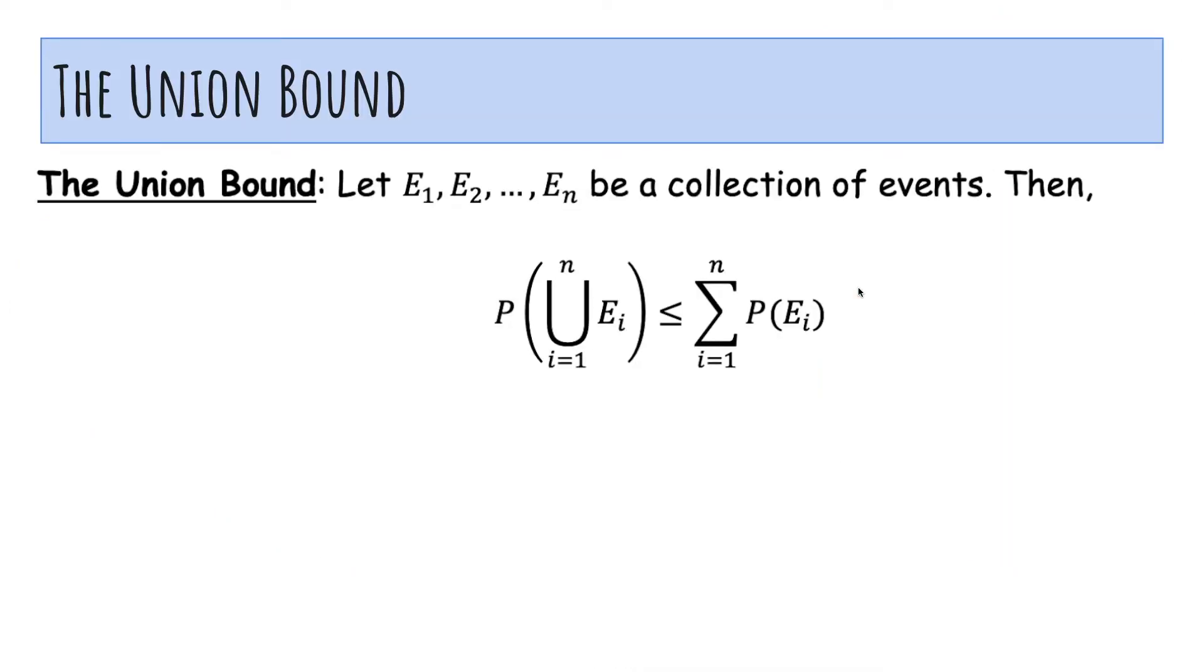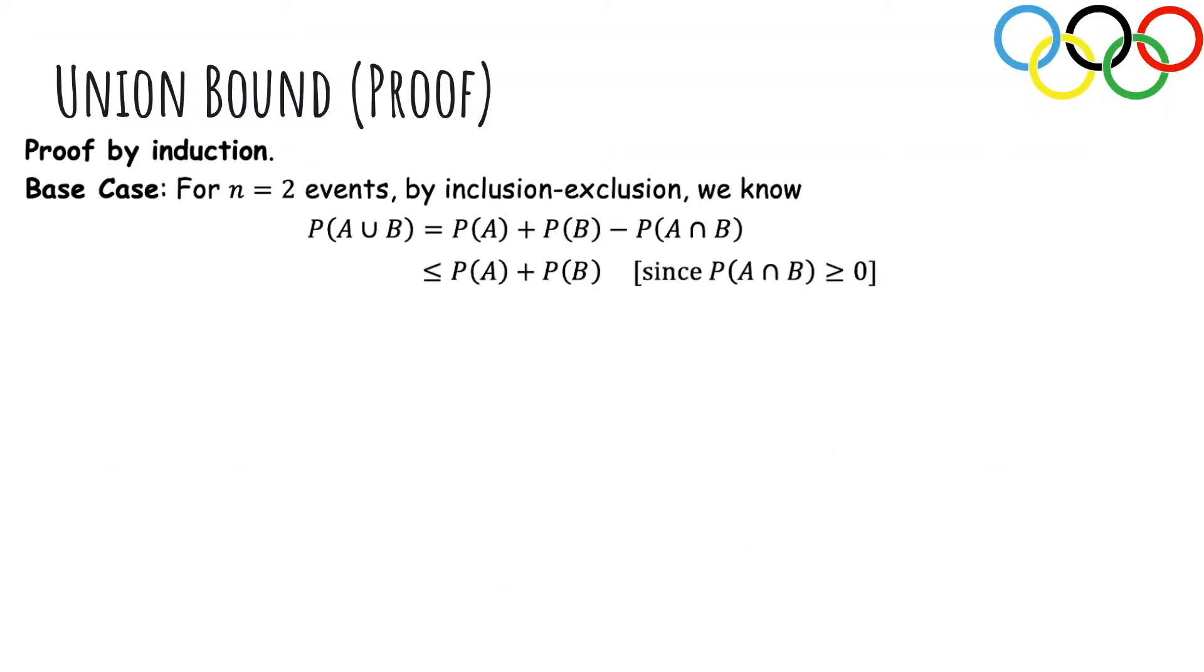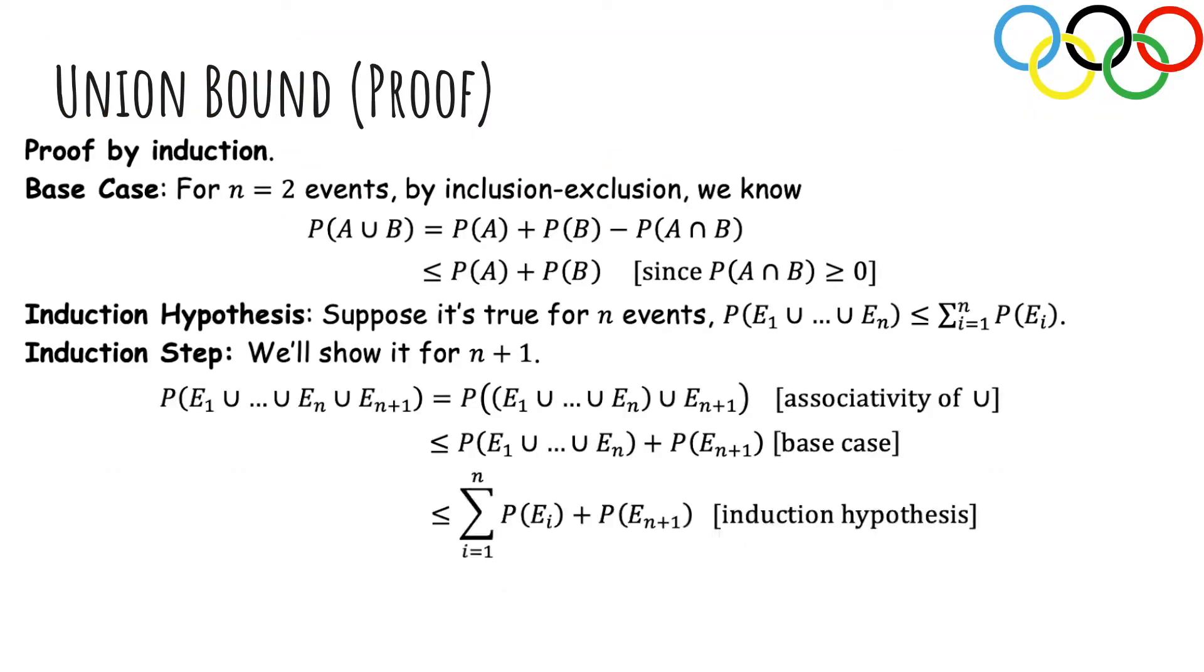So the union bound says if you have N events, the probability of the union is less than the sum of the probabilities of the events. You can see that from the picture for N equals 2. And this also actually happens to work for infinitely many events. I'm going to actually prove the union bound. You can use induction and inclusion and exclusion, but I'm going to skip over that.